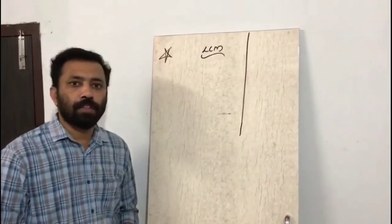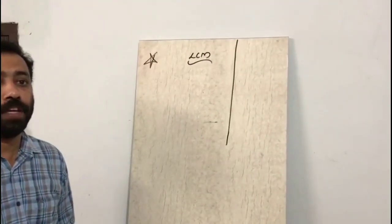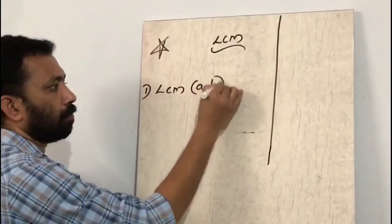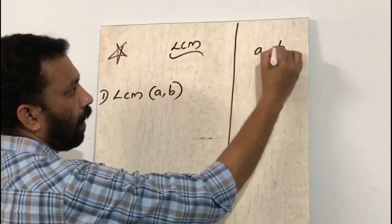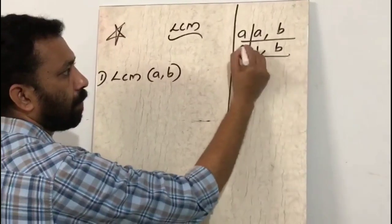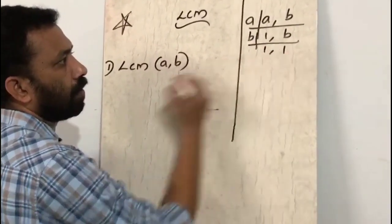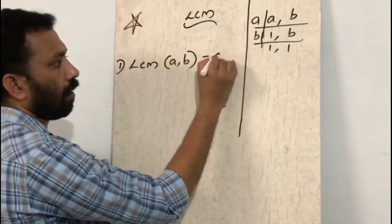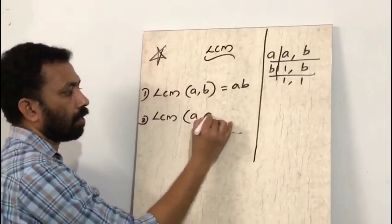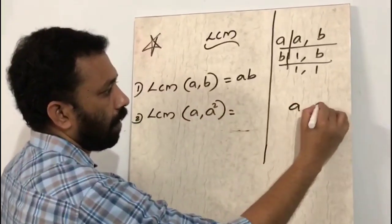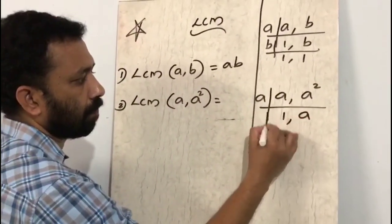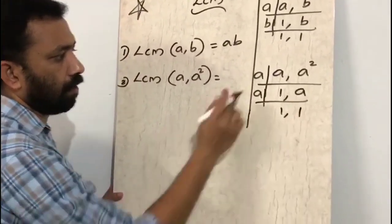Before moving to this topic, let us discuss how to find the LCM of numbers and variables. For example, what is the LCM of a and b? The LCM of a and b is a × b, which is ab. Similarly, the LCM of a and a² is a².